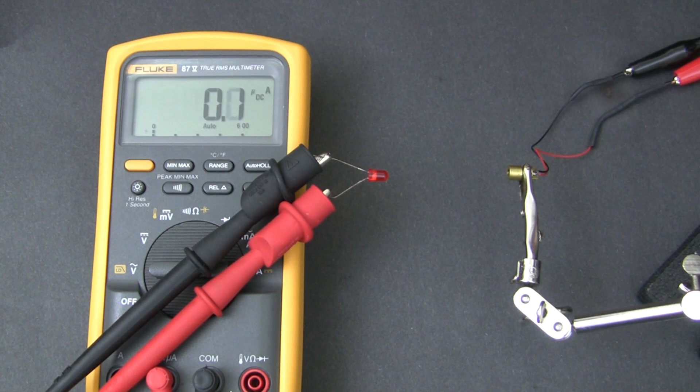Here's an ordinary red LED and an ordinary red LED laser pointer module. The LED is connected to my multimeter which is set to measure current, and as you'd expect no current is flowing through the LED.